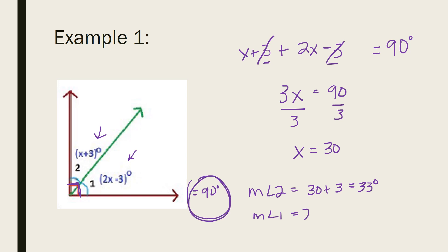Let's do the math to check our work. For angle 1, plug in 30 for x: 2 times 30 is 60, minus 3 is 57. They check out. The measure of angle 2 is 33 degrees, and the measure of angle 1 is 57 degrees.